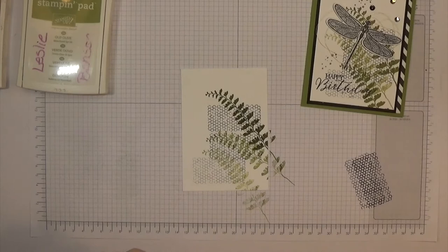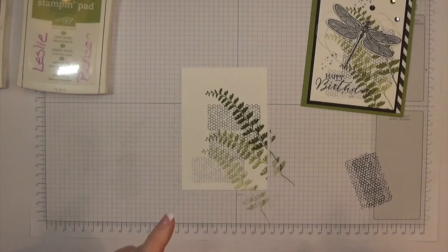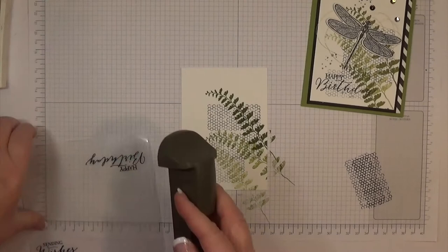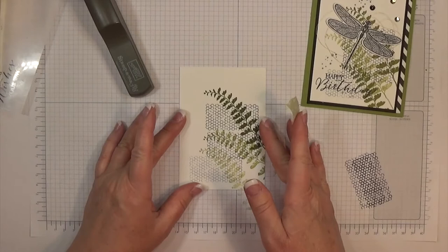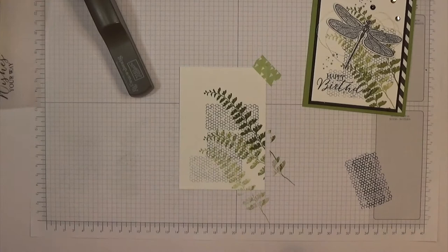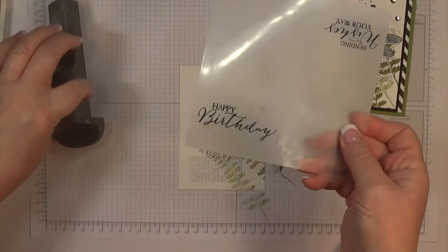Now I'm going to do the sentiment and I'm going to show you how to use the Stampamajig. Some people love this—I love it because I'm kind of a perfectionist and I don't like to eyeball things. Some things I'm okay with eyeballing, but my sentiments I like them to be straight and perfect. I'm going to use a little washi tape to hold that down.